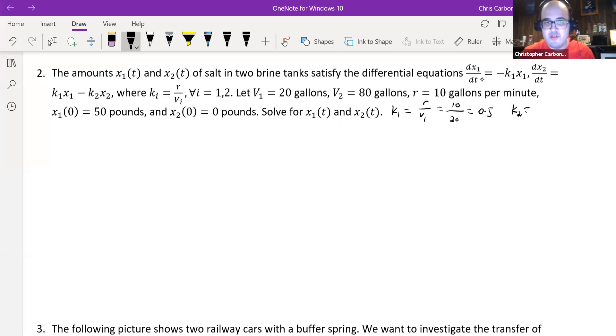k₂, this would be r divided by v₂. In our case, this would be 10 divided by 50. That's going to be 10 divided by 80. This would give us just 1 eighth, which as a decimal amount would be 0.125.